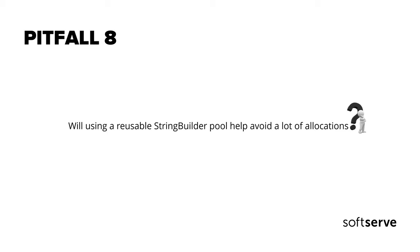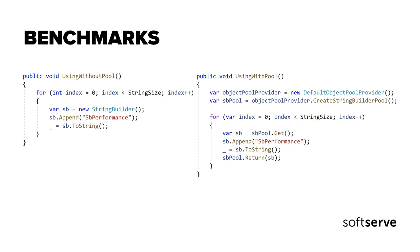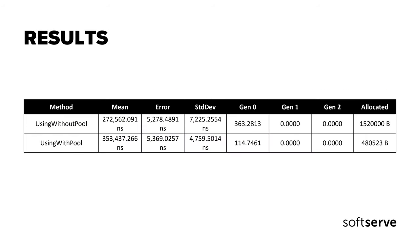If you use a lot of StringBuilders, you may want to use a reusable pool of StringBuilders to avoid lots of allocations. Instead of creating a new instance when you need it, you get an existing one from the pool, and then return the instance to the pool once you are finished. This means you'll spend less time in garbage collection. We compare using StringBuilder without a pool versus with a pool. The pooled version is a little bit slower, but it drastically reduces allocations, so I think it is useful.